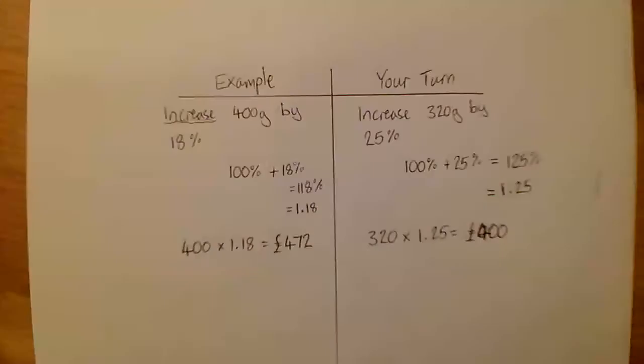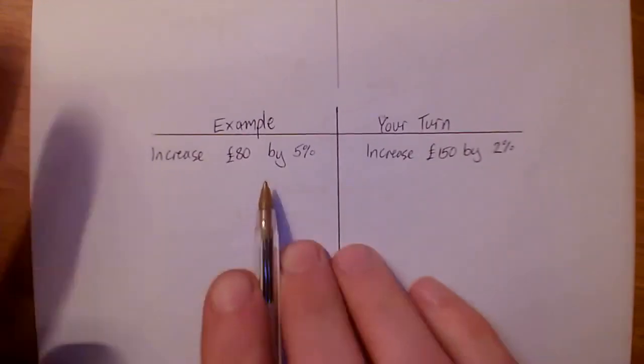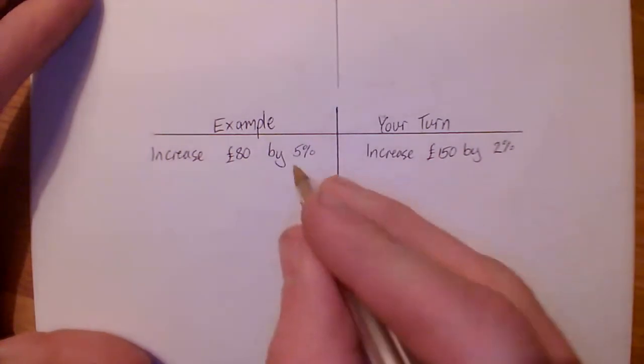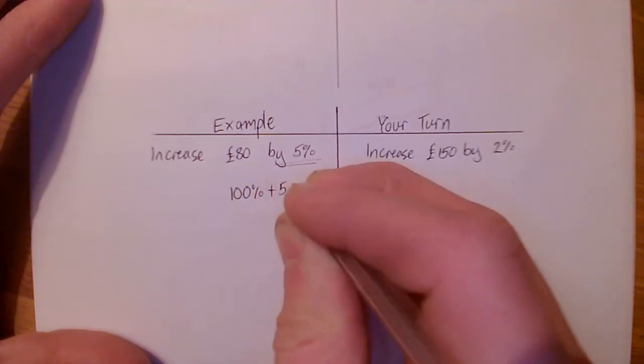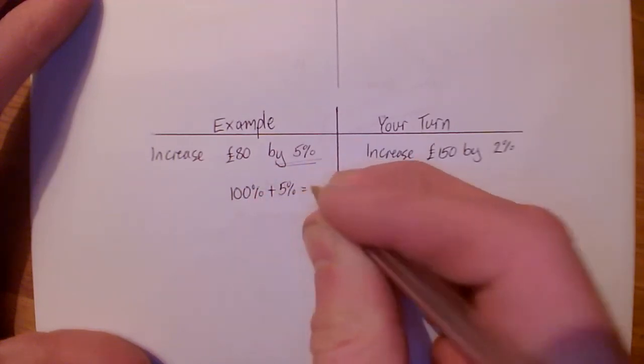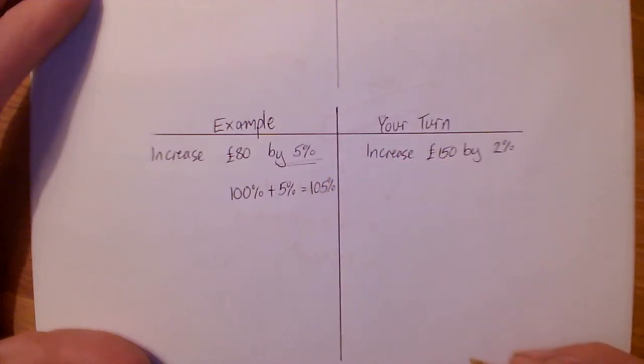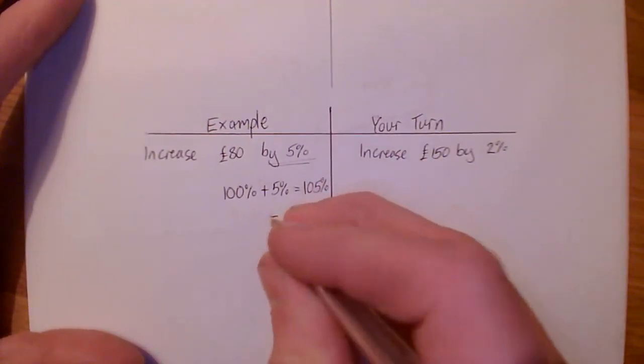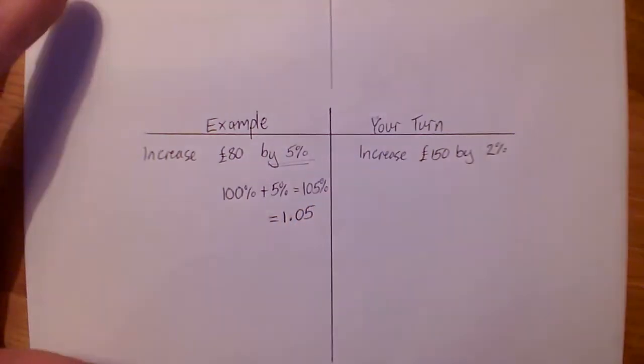Now I've got two more examples to do for you, and these examples are very slightly different. I'm going to do one. So again, we're increasing, but by 5% this time. It looks a little different. So I'm just going to run through that. So 100% plus 5% is 105%. We'll turn that into a decimal. We get 1.05 as our decimal.